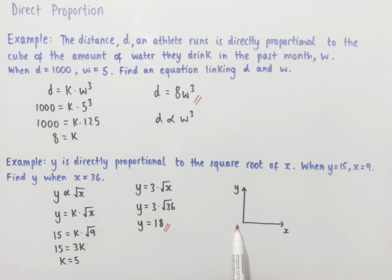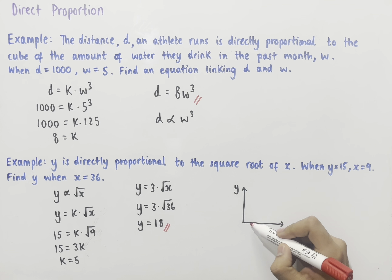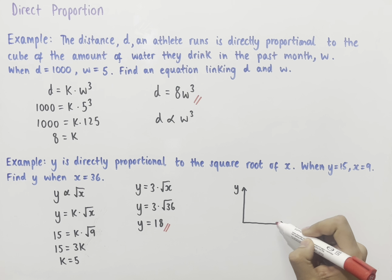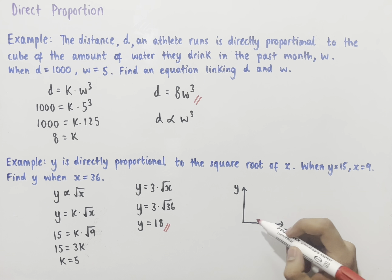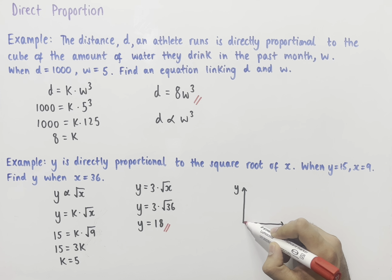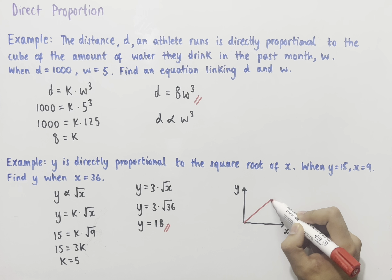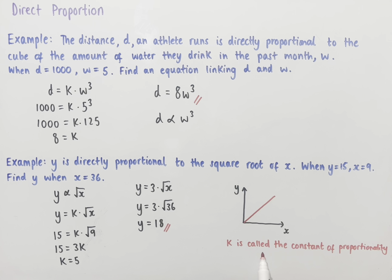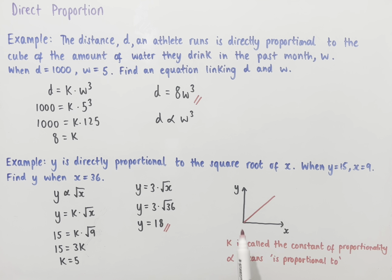Another way of thinking about direct proportion: if we have two variables x and y, then as x increases, y should also increase. We should end up with a relationship that looks like y equals kx. k is called the constant of proportionality, and the proportional symbol means 'is proportional to.' This is what we need to know for direct proportion.